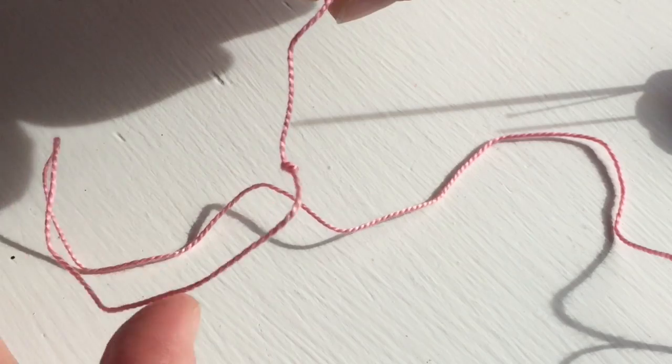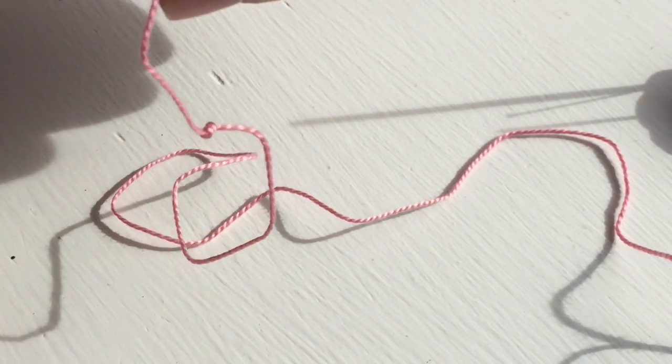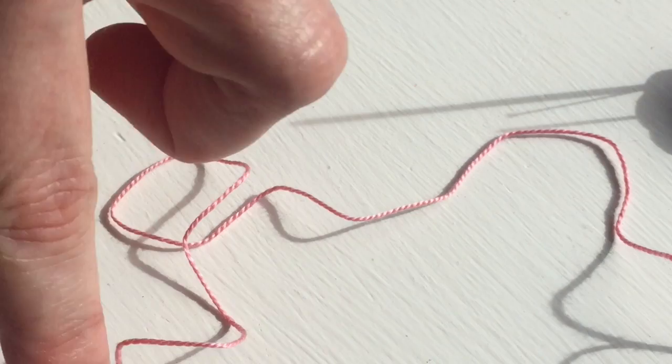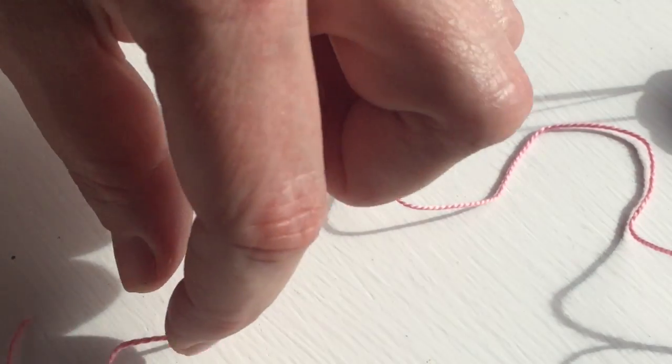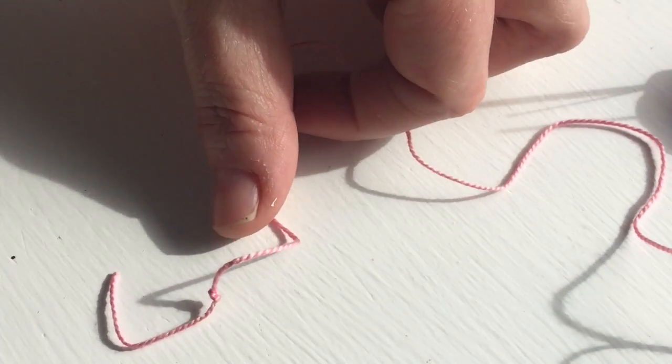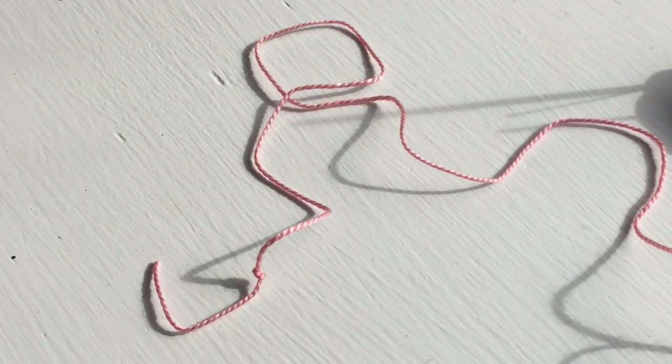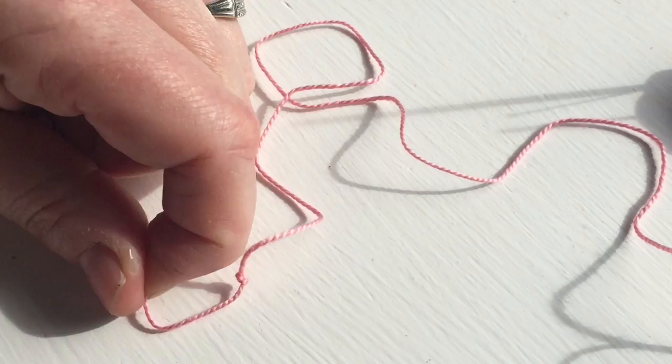That is one single knot. Sometimes one knot is not enough because the hole that your needle makes is larger, so you need to make a double knot. To get a knot on top of a knot, we're going to do it the exact same way.